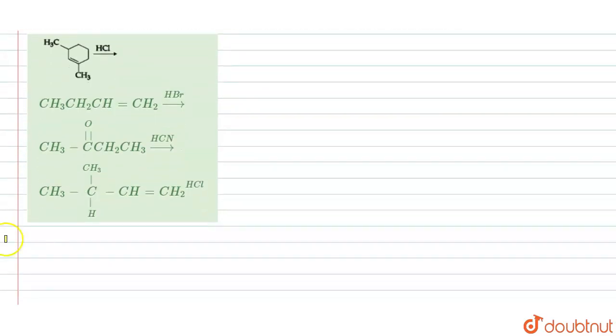Now we will discuss one by one reaction. First reaction is cyclohexene. Here we have methyl, here we have methyl. Then the reaction we are doing is HCl, which type of reaction is electrophilic addition reaction because your pi bond and H+ is an electrophile. What will be the product? Product will be Cl addition of electrophile, addition of Cl- according to that double bond carbon having less number of H.